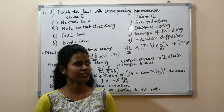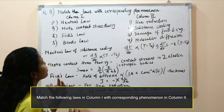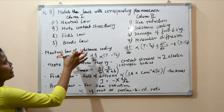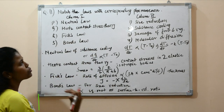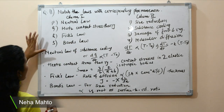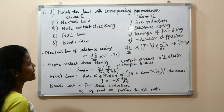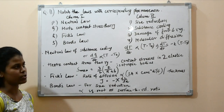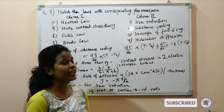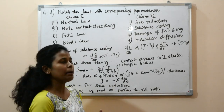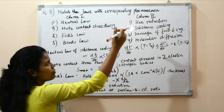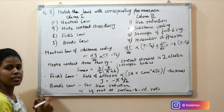We will start with question number 11, which states: match the laws with corresponding phenomena. The laws given in column 1 are Newton's law, Hertz contact stress theory, Fick's law, and Bond's law. Column 2 gives the phenomena: size reduction, substance cooling, damage of fruits and vegetables, and molecular diffusion.